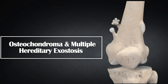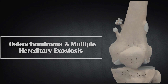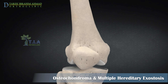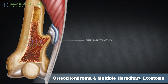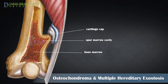An osteochondroma is the most common benign bone tumor in children. It is a cartilage-capped bony spur arising on the external surface of a bone. The spur contains a marrow cavity that is continuous with the cavity of the underlying bone. A cartilaginous cap overlays the bony spur and is the source of growth, and a fluid sac called bursa.